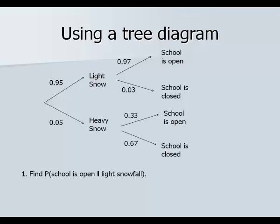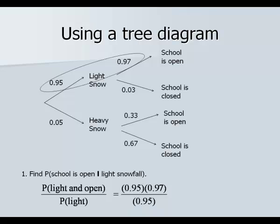With our probabilities filled in on the tree diagram, the question asks: probability that school is open given it was a light snowfall. The formula says probability of both events occurring divided by the probability of the given. Both events mean P(light and open) = 0.95 times 0.97 on the top of the fraction, divided by the probability of light, which is 0.95. Multiply and divide: you get 0.97 or 97 percent.